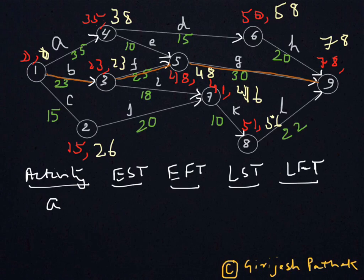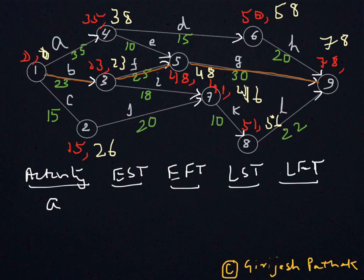The Earliest Start Time indicates the earliest time at which the activity can be started. So you look at the node where that activity starts. Activity A starts at node 1, and the earliest time for node 1 is 0, so you can start activity A right at the beginning. Therefore, the Earliest Start Time for activity A is 0.